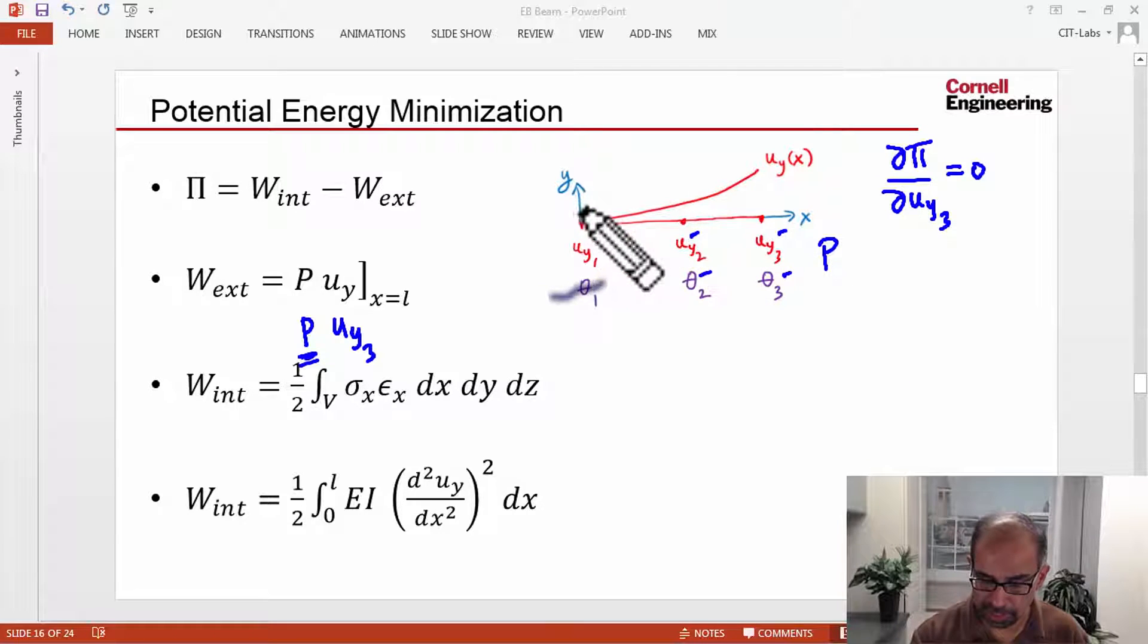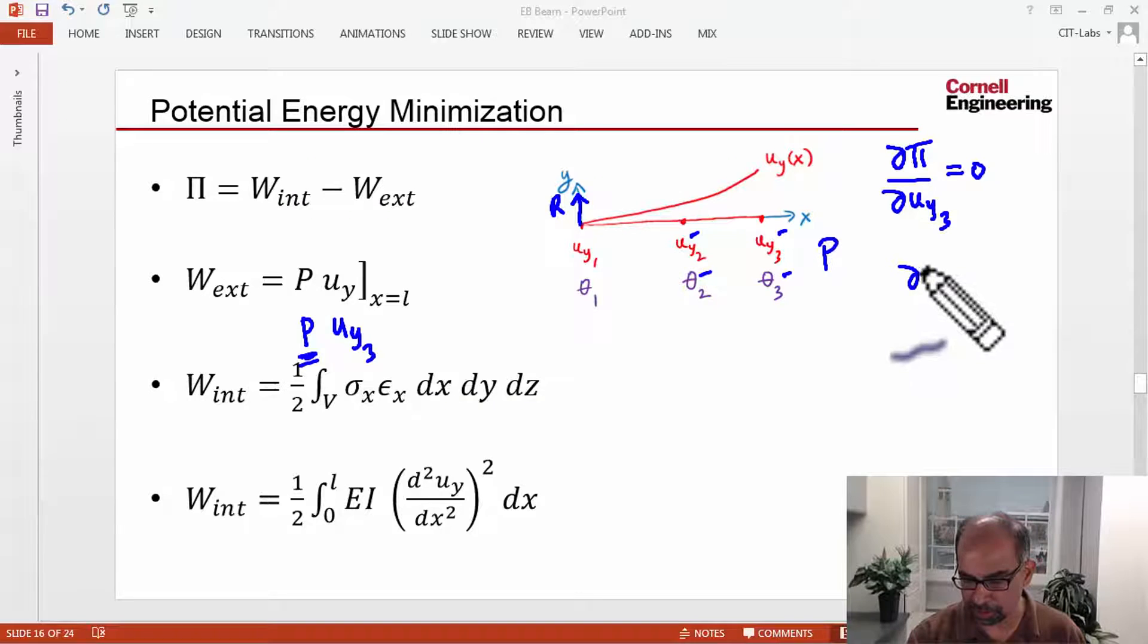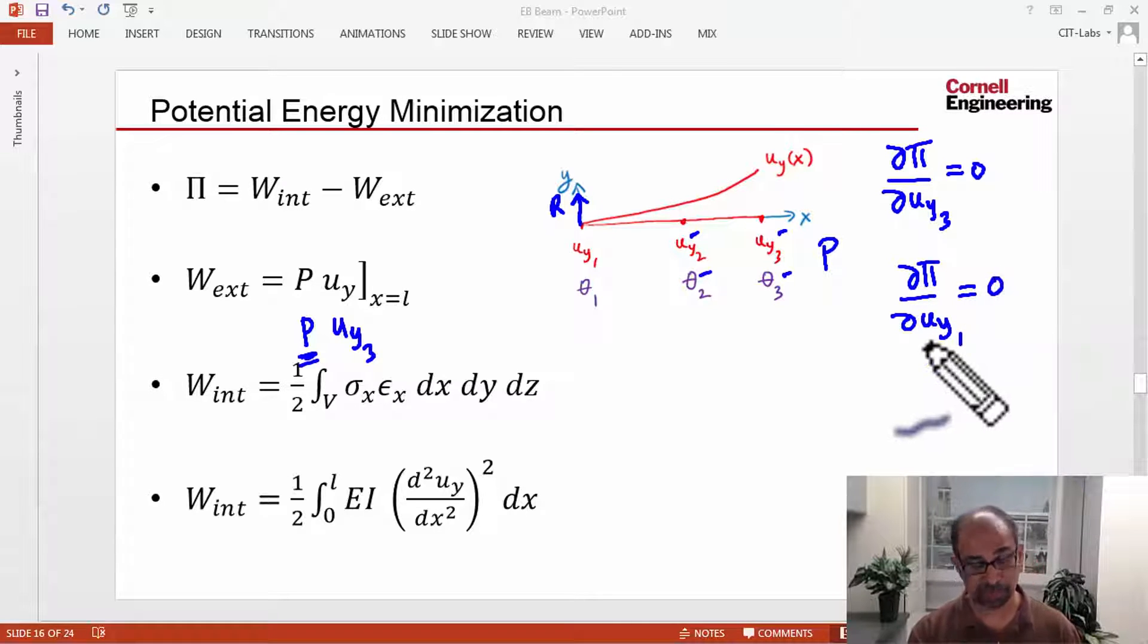Correspondingly, here you have a reaction because you're fixing the beam over there. By analogy, when you take the derivative of the potential energy with respect to UY1, that has to be zero. That's true because if I perturb UY1 by a little bit, the potential energy has to increase.